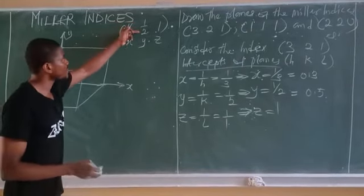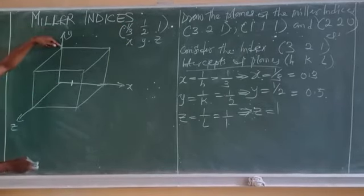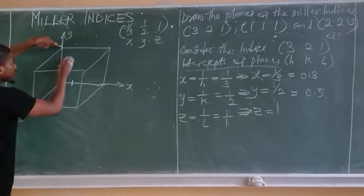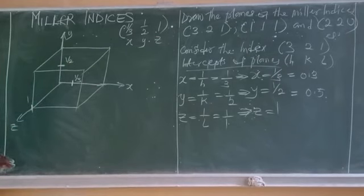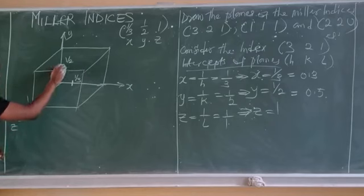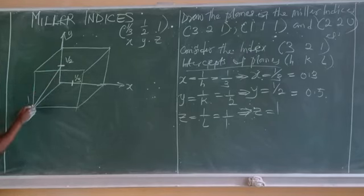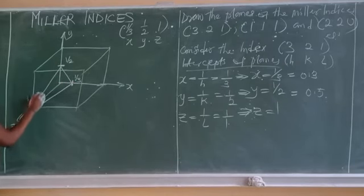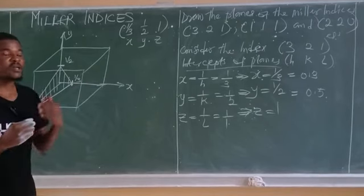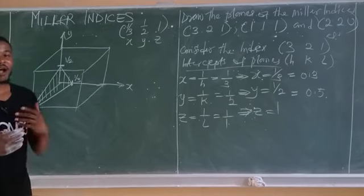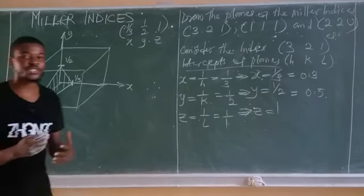Connect all three intercept points together — draw from y to z, from y to x, and from x to z — to form the plane. Shade this area; this becomes the given plane. Now for the direction, draw a line from the origin perpendicular to this plane — at 90 degrees. Indicate it with square brackets: [321] direction.